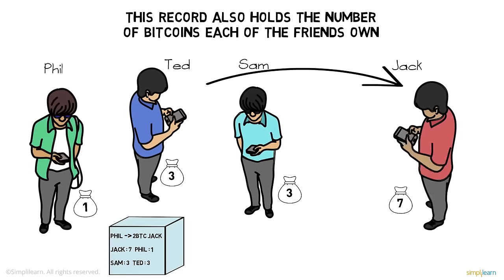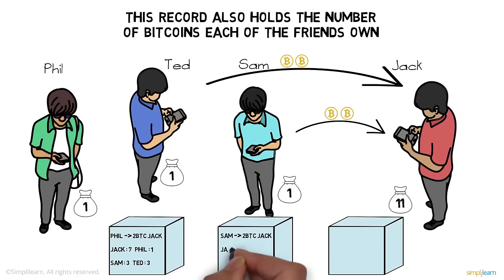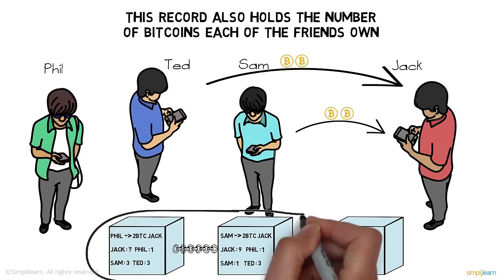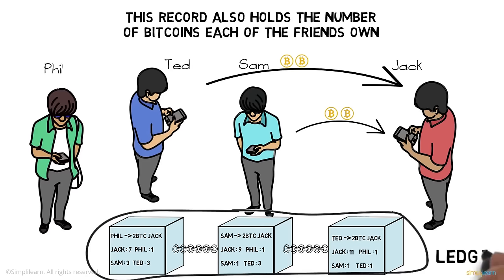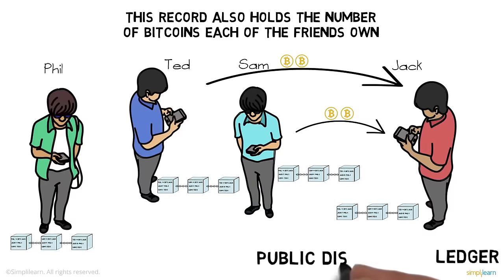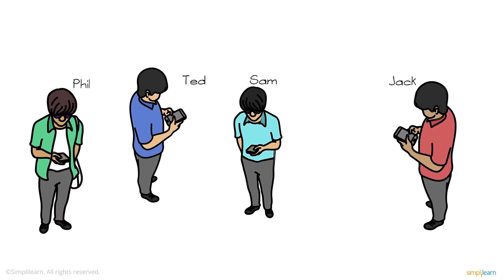Sam and Ted also send two bitcoins to Jack, and a new block is created for each transaction. These blocks hold transaction details and each friend's current bitcoin balance. Each block takes reference from the previous one for the number of bitcoins each friend owns. This chain of records or blocks is called a ledger, shared among all the friends — forming a public distributed ledger. This forms the basis of blockchain.